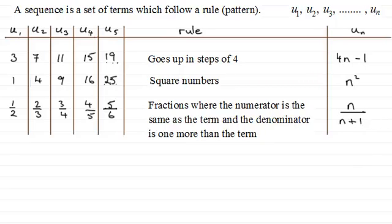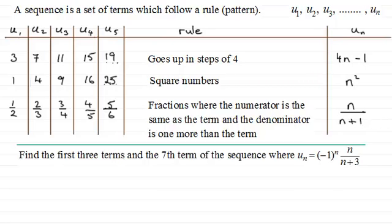Now I've got a question here that you might like to try. We've got to find the first three terms and the seventh term of the sequence where the nth term u_n is equal to (-1)^n multiplied by n all divided by n plus 3. So I'll give you a moment to pause the video, have a go at this one, see if you can write down the first three terms and the seventh term of the sequence given by this formula.